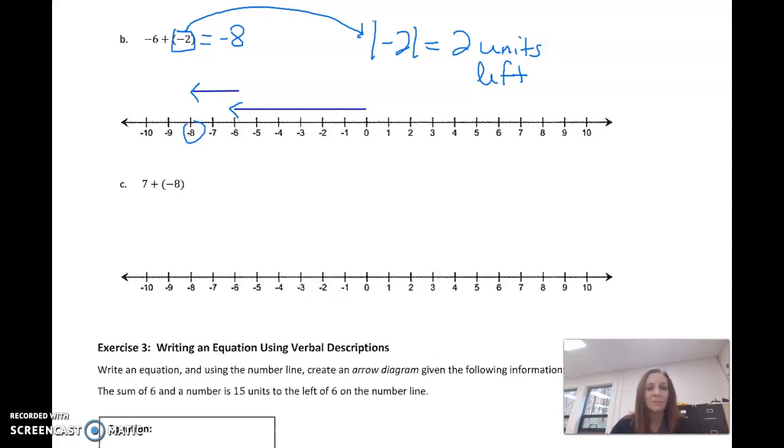Okay, one more. Hopefully you're kind of getting the swing of things here. Our seven here means we're going to start from zero, and we're going to go to seven. And then we take our negative eight here, and what does that tell us to do?